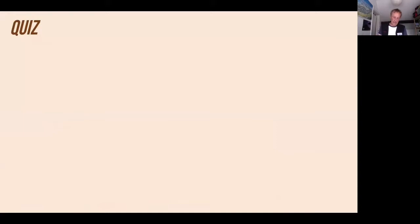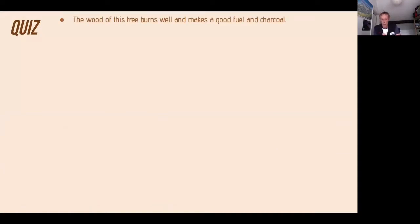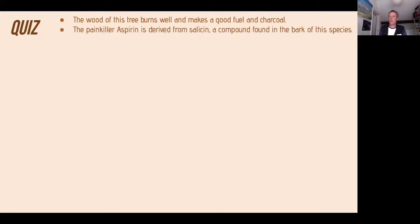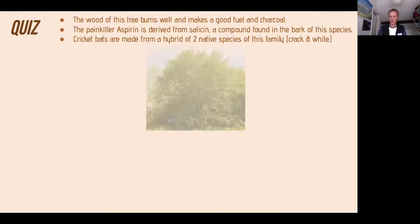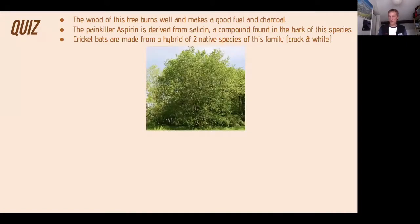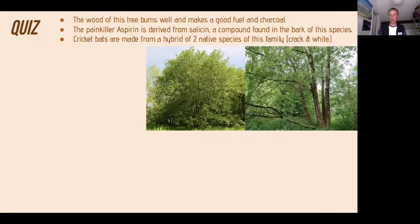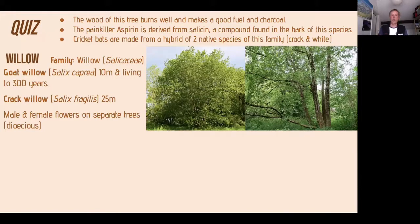Moving on to the willow family. The wood burns well and makes good charcoal. The painkiller aspirin is derived from salicin, a compound found in the bark of this species. Cricket bats are made from a hybrid of two native species — the crack willow and the white willow. The wood is spongy so it absorbs vibration. There are 300 species of willow around the world, associated with wet areas and with a reputation for immortality. If you plant a willow branch in the ground it's very likely to re-root, even upside down.